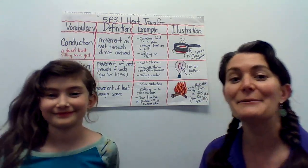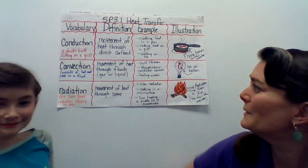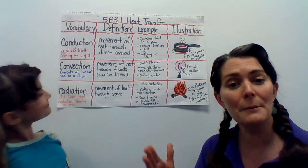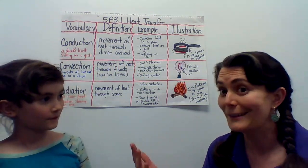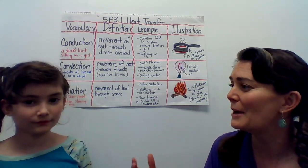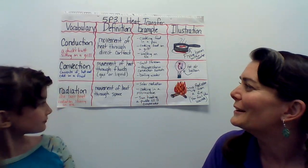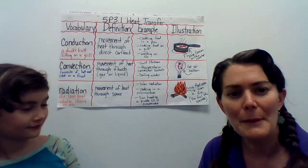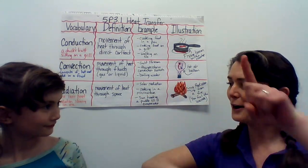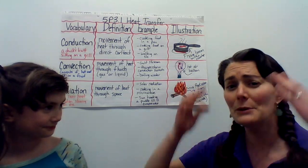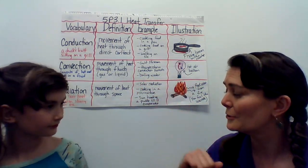The other one is convection. Convection is the movement of heat through fluids. Remember, fluids can mean either a gas or a liquid — it's any state of matter where the molecules can flow. So we remember convection as currents of hot or cold in a fluid, and fluids are gases or liquids.